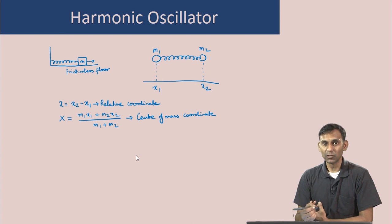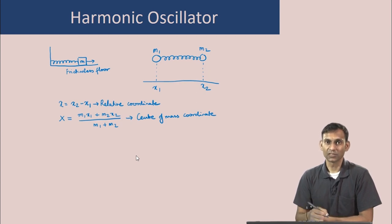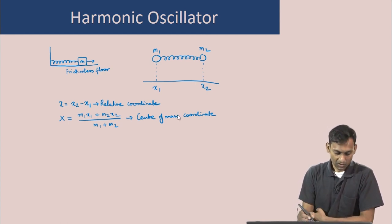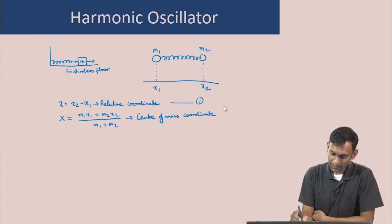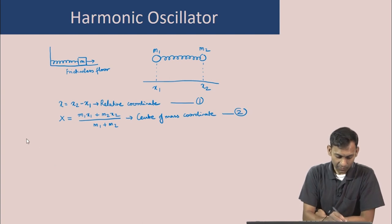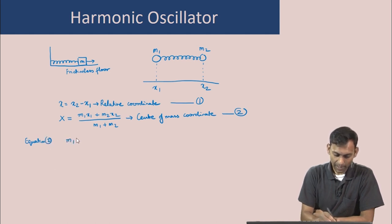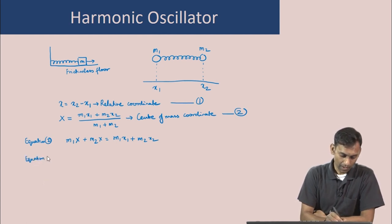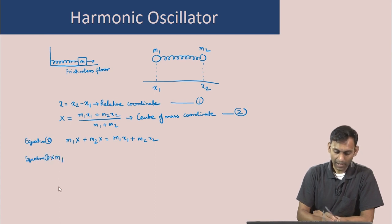Our goal is to write the Hamiltonian of this two-mass problem in terms of these new coordinates: the relative coordinate and the center of mass coordinate. We will express x1 and x2 in terms of the relative coordinate and the center of mass coordinate. Let us call the relative coordinate equation 1 and the center of mass equation 2, and begin with equation 2.